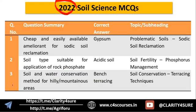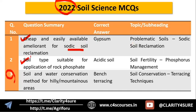In 2022, there were only three questions. The first was on a cheap and easily available ameliorant for sodic soil reclamation — this is repeated from 2021, highlighting the importance of PYQ analysis. If you had seen the 2021 PYQ, you could have solved this in 10 seconds. This indicates that some questions may repeat, which is why PYQ analysis is really important.